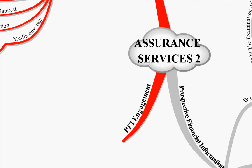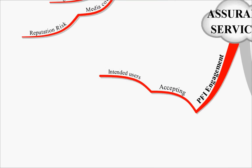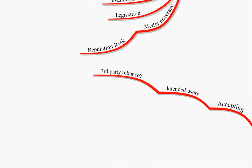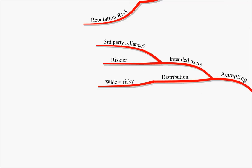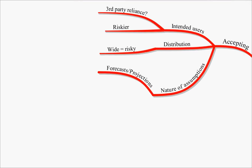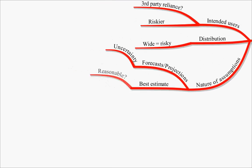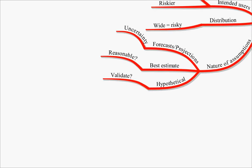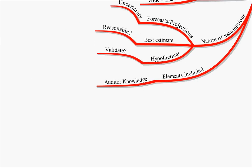Where does the auditor come into this? The auditor may be called in to provide assurance that this prospective information is realistic. Accepting an engagement along those lines, you have to consider a few things. First, the intended users - if third parties are going to rely on this, as we know from our liabilities lecture, you need to be very careful. It'll be much more risky if third parties rely on it, and you need to be sure who it will be distributed to. You need to look at the nature of the assumptions - are they forecasts or projections? Is there uncertainty? What basis have they been made on? If they're best estimate, is that estimate reasonable? If they're hypothetical, is it valid? You then need to look at the elements included and whether you have knowledge over those elements.